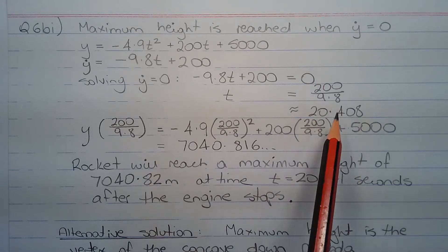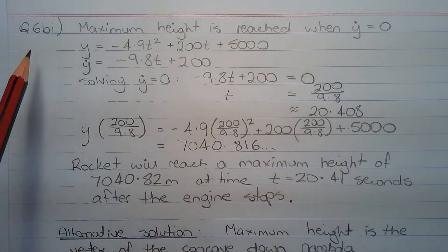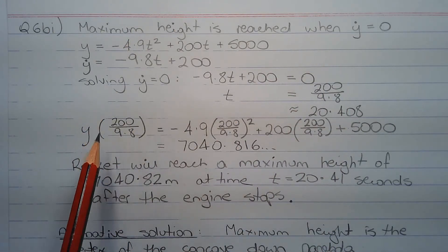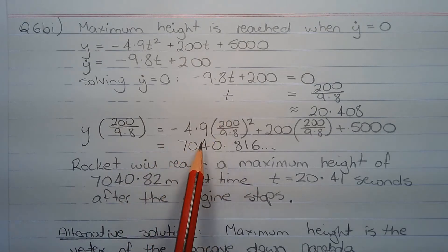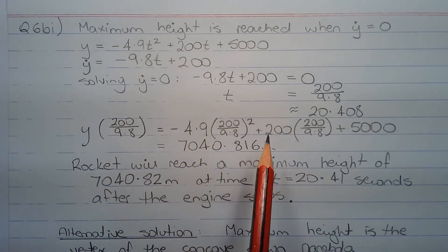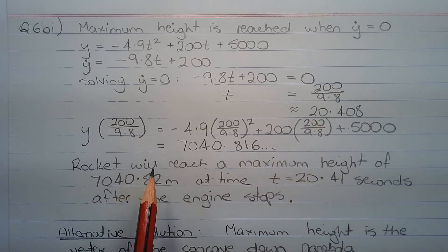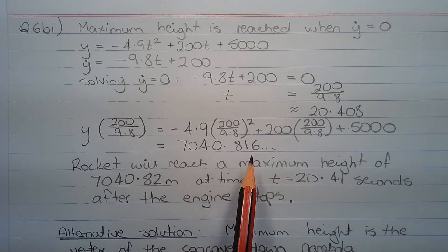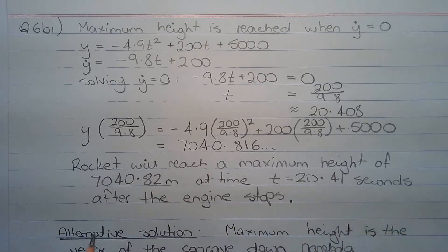To find the height, we substitute this value, 200 over 9.8, into the equation for vertical displacement. So y of 200 over 9.8 is equal to negative 4.9 times (200 over 9.8) squared plus 200 times (200 over 9.8) plus 5000, and that equals 7040.816. So the rocket will reach a maximum height of 7040.82 metres at time t equals 20.41 seconds after the engine stops, correct to two decimal places.